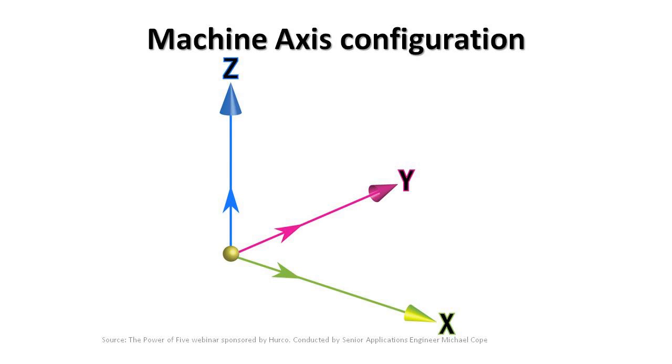The 5-axis machine configuration is something that we see a lot of inaccuracies in when people are talking about machine configurations in the 5-axis world.